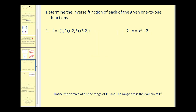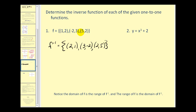Let's go ahead and find some inverse functions. Here's a function that consists of three ordered pairs. The inverse function consists of the ordered pairs with x and y coordinates interchanged: (2, 1), (3, −2), and (2, 5). We simply interchange the x and y coordinates for each ordered pair to get the inverse. Since we were told the original functions are one-to-one, we can find the inverse without further questioning.